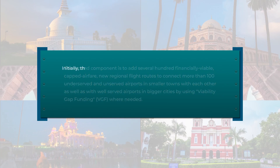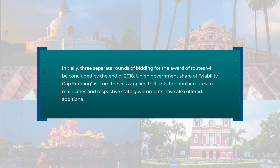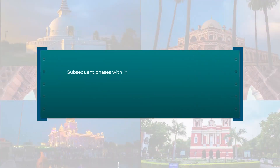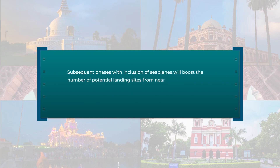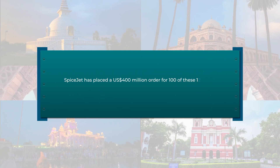The second component is to add several hundred financially viable capped-airfare new regional flight routes connecting more than 100 underserved and unserved airports in smaller towns with each other and with well-served airports in bigger cities, using Viability Gap Funding (VGF) wherever needed. Initially, three separate rounds of bidding for the award of routes were conducted. Subsequent phases will include seaplanes, boosting potential landing sites from nearly 500 airports to over 5 lakh water bodies.